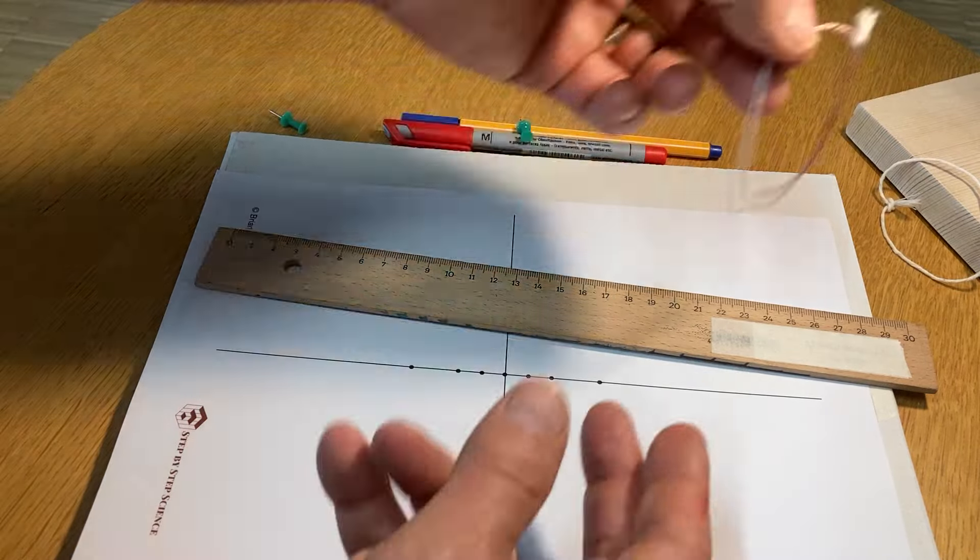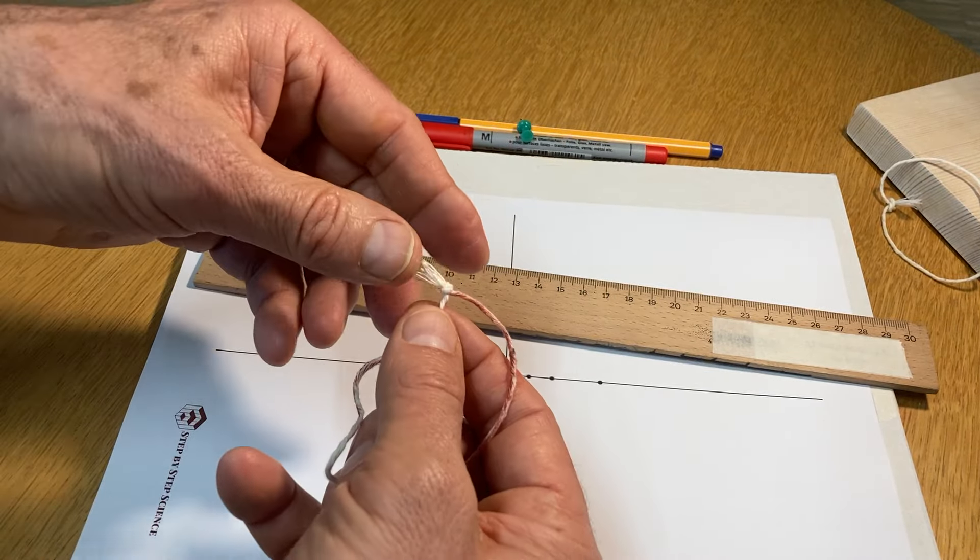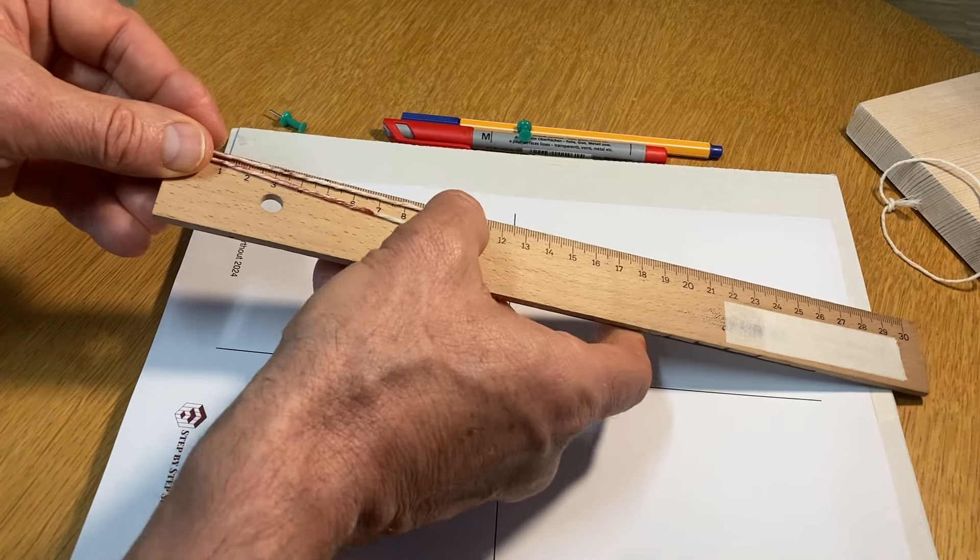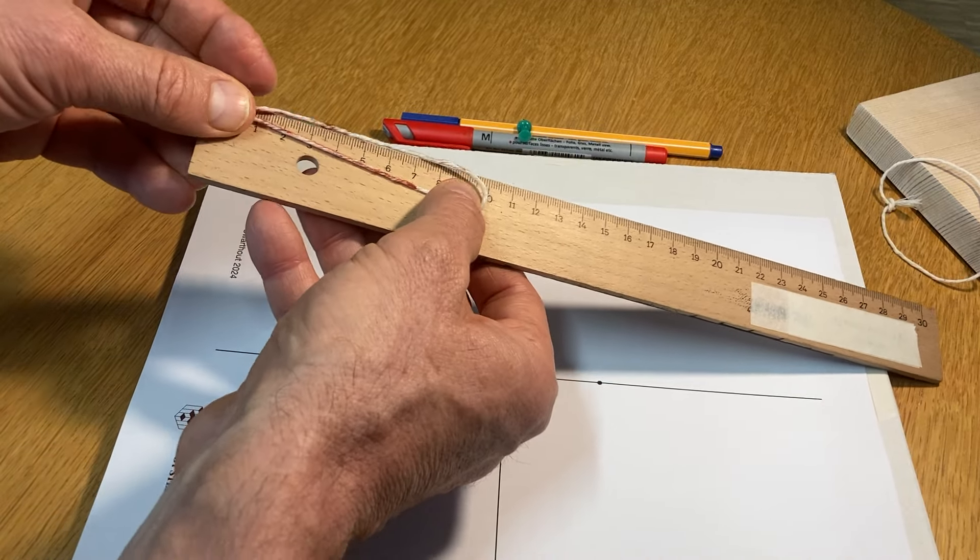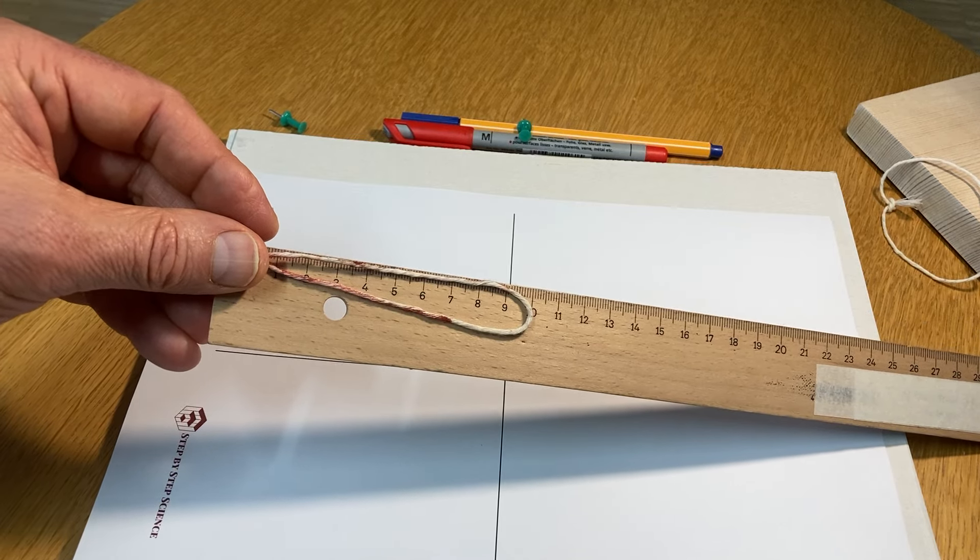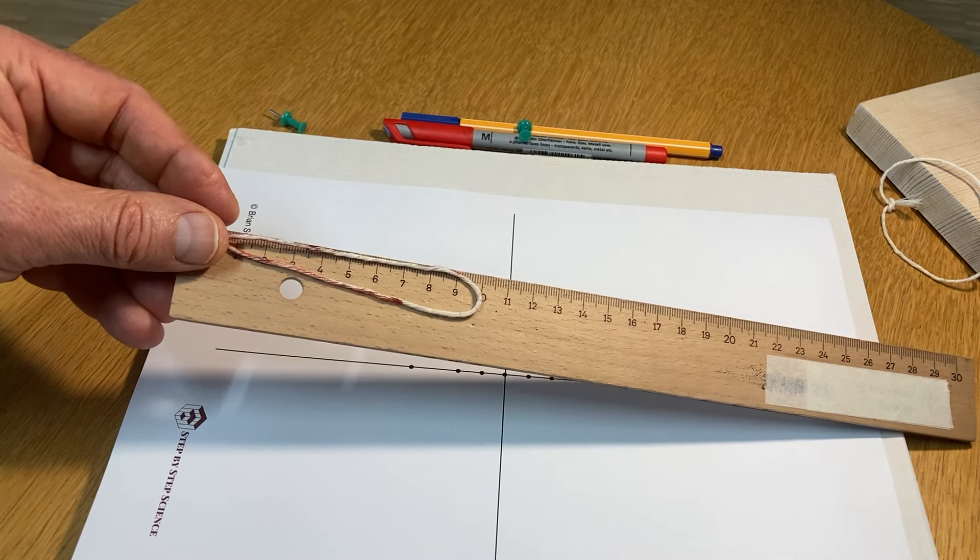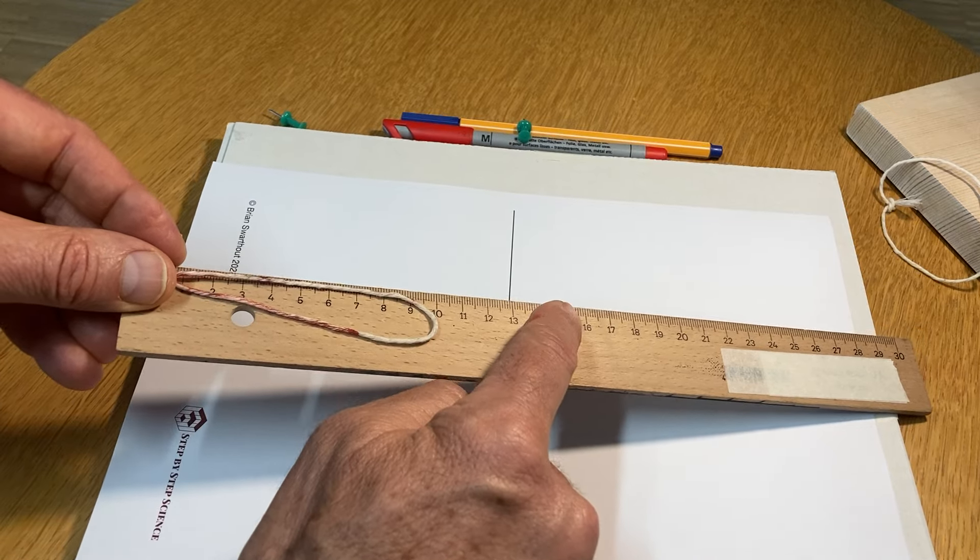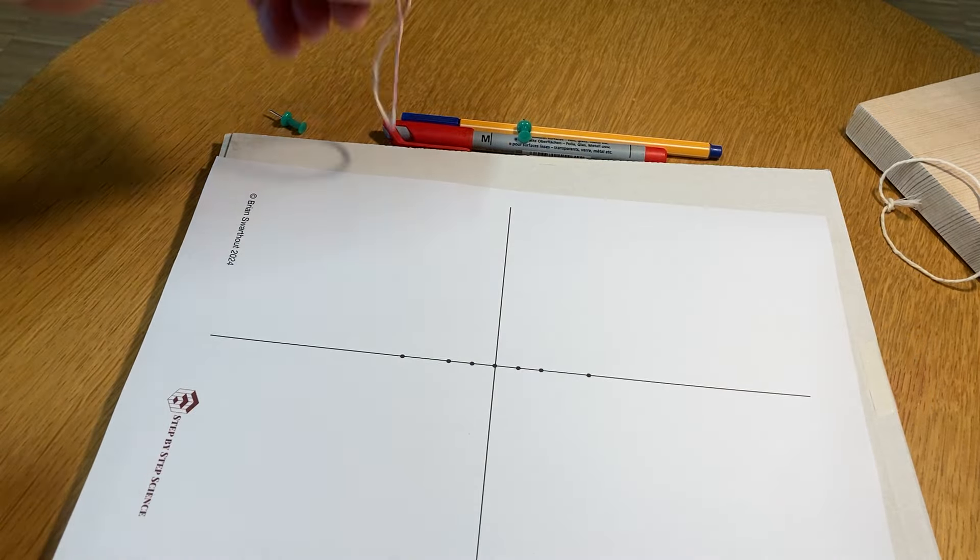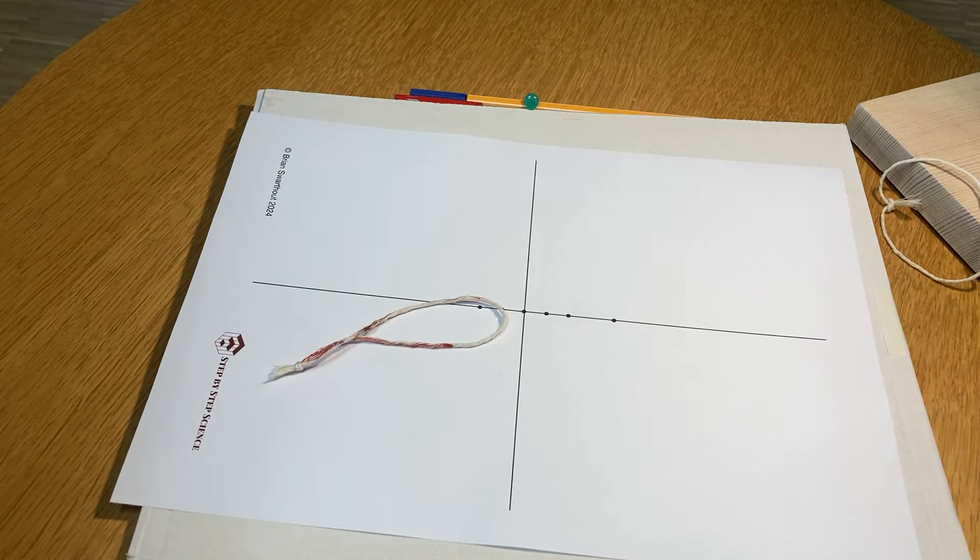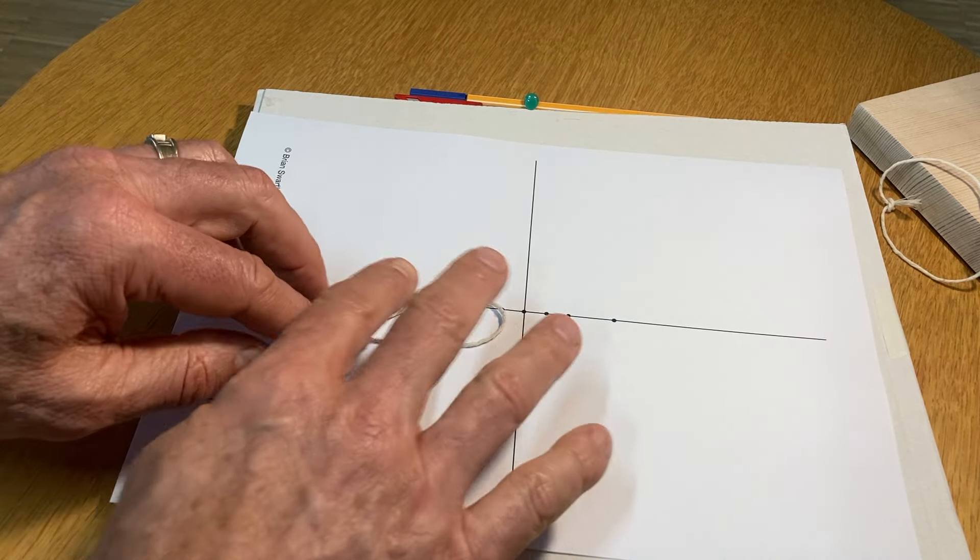This is one that I made earlier because I find that it works best if the loop of string is approximately 10 or 11 centimeters long. You can see this loop of string that I made is approximately 10 centimeters long. If you make the loop smaller, the ellipses don't work out very well when you draw them. If you make the loop too long, the ellipses will go off the piece of paper. So 10, 10 and a half centimeters, that's the loop that I'm going to use.